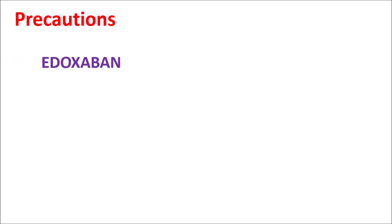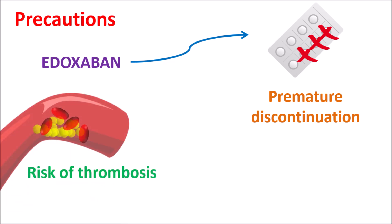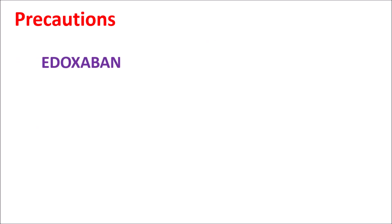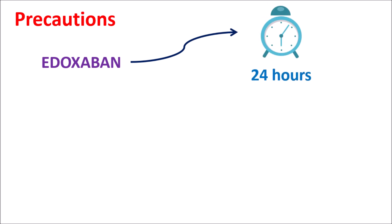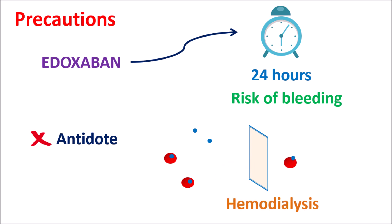Another important precaution is that Edoxaban should not be stopped prematurely, as premature discontinuation may increase the risk of thrombus formation. Edoxaban can act for up to 24 hours, showing anticoagulant activity for 24 hours after administration. Therefore, before surgery, Edoxaban should be stopped at least 24 hours in advance. There is no suitable antidote available for Edoxaban, and hemodialysis is ineffective at reversing its activity.